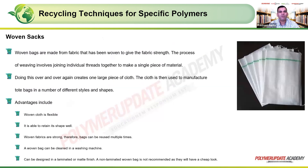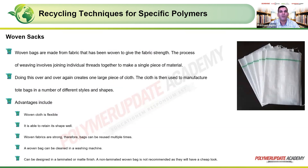Next we look at woven sacks. Woven sacks are made from fabric that has been woven to give it strength — individual strands of plastic knitted or woven together, similar to fibers in a shirt. The process of weaving involves joining individual threads together to make a single piece of material.